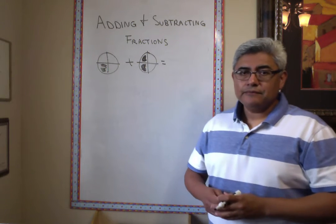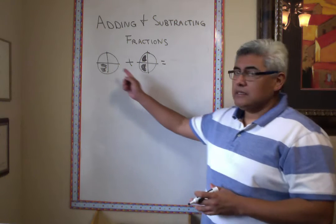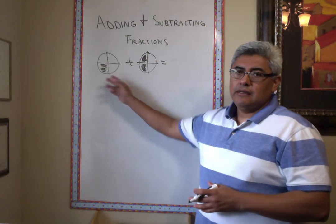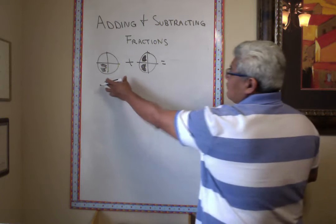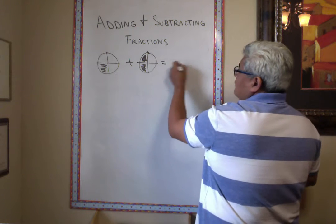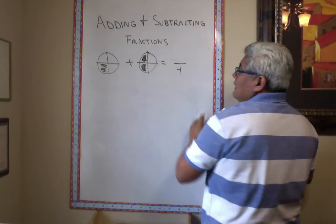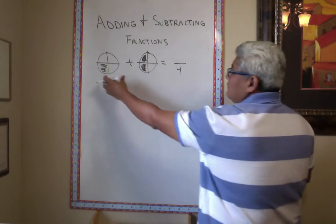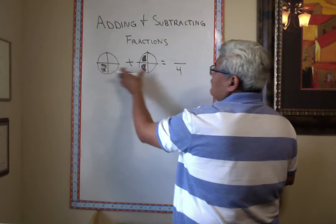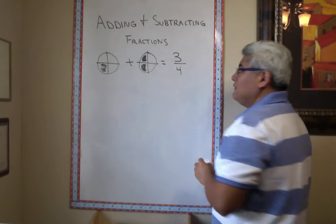Now, when we add fractions, we have to take into consideration the pieces that the whole got cut into. So they all got cut in fourths. Now, the denominator is going to tell you they got cut in fourths, and then we add the pieces that you ate. So, for example, you ate one-fourth plus two-fourths equals three-fourths.